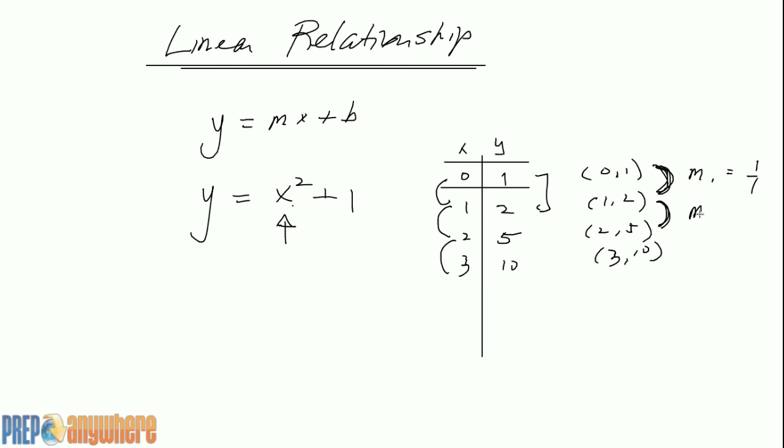And here it's going to be 3 over 1. Here it's going to be 5 over 1. Look at the slope—it's constantly changing, right? If the slope is changing like this between points, it's not linear.